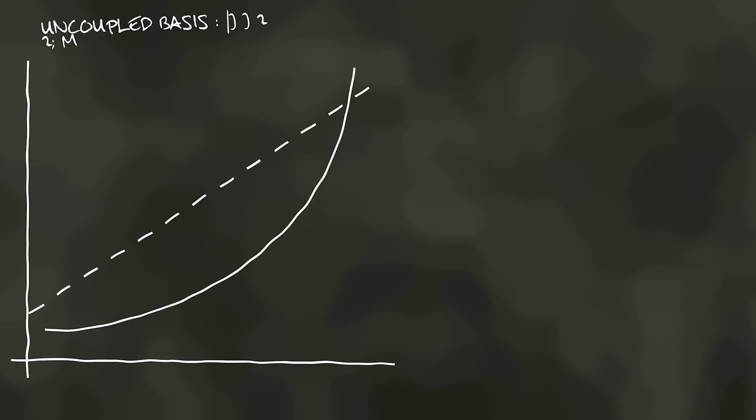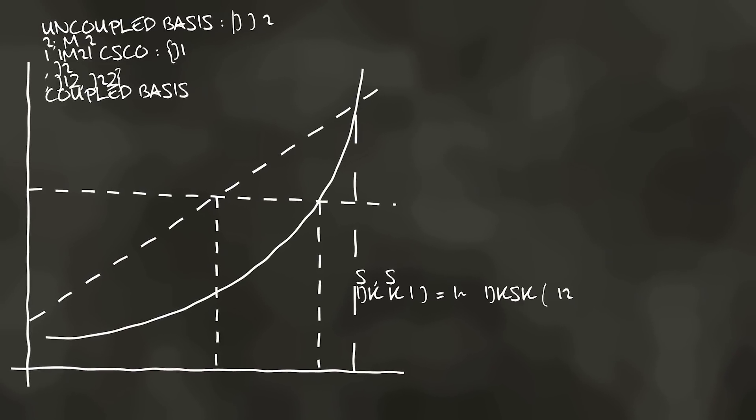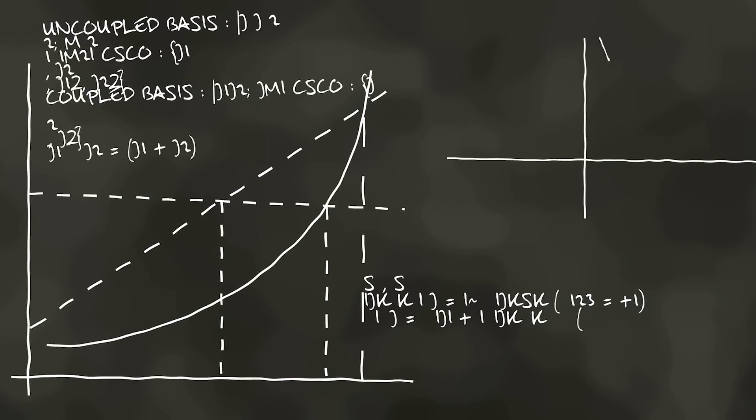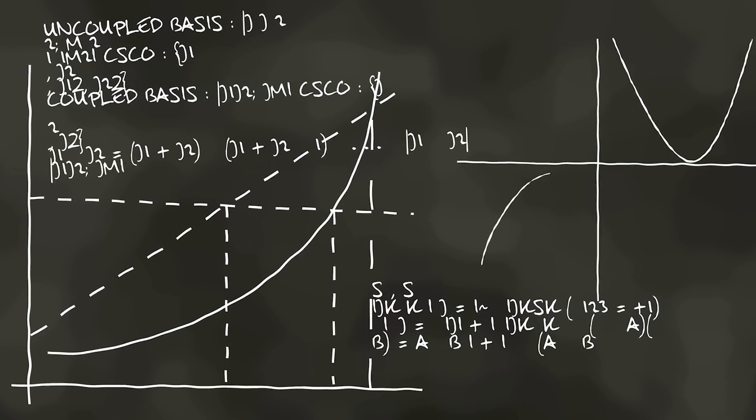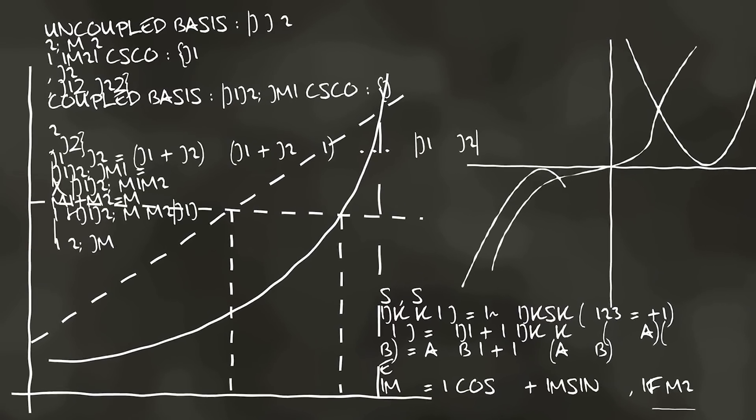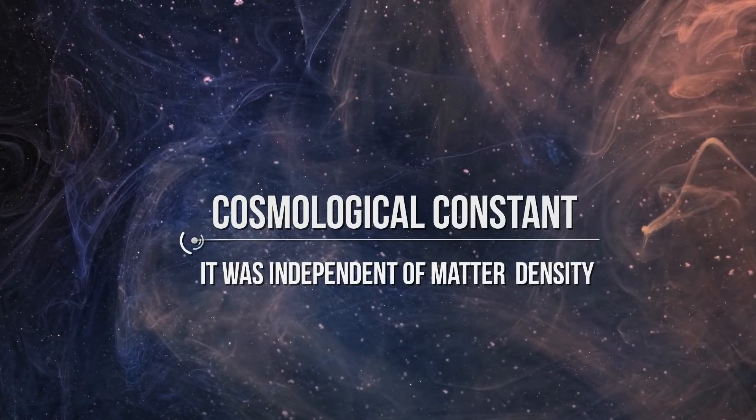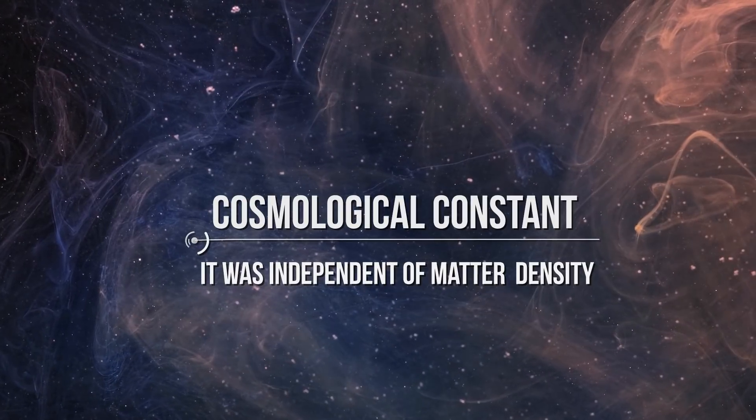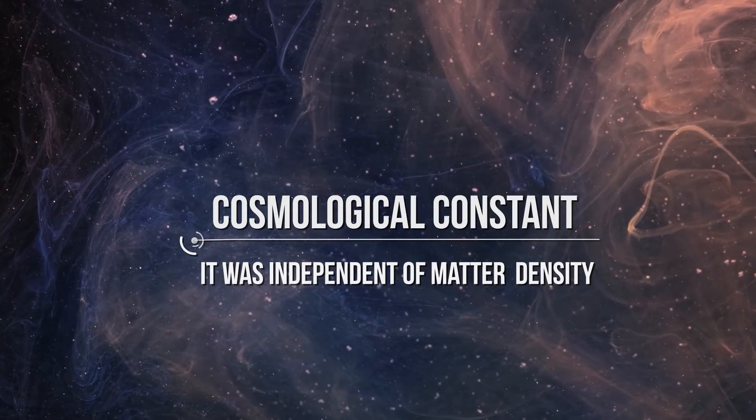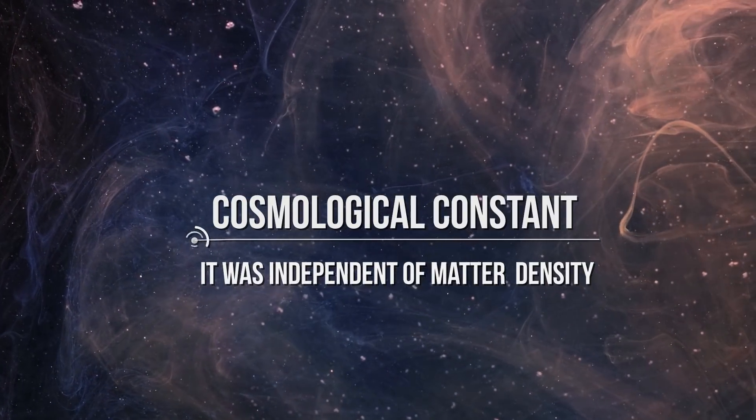Therefore, Einstein added a new term to correct the equations, corresponding to a repulsive force in order to counterbalance the attractive gravity of matter that would lead to collapse the universe on itself. Einstein called this term cosmological constant, clarifying that, unlike gravity, it was independent of matter density.